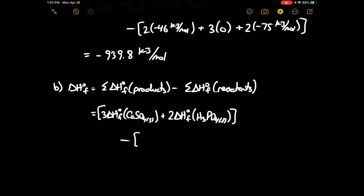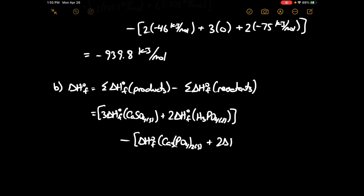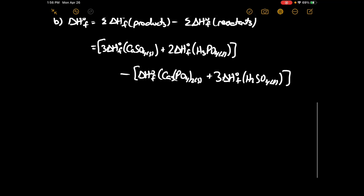On the reactant side we have calcium phosphate solid plus 2 delta H°f of calcium sulfate, minus delta H°f of H₂SO₄ liquid. Looking these values up from Appendix 4, delta H°f of CaSO₄ is minus 433 kJ/mol.